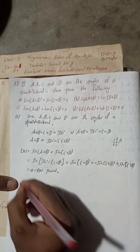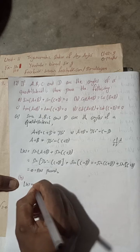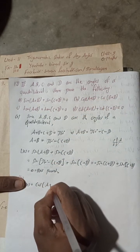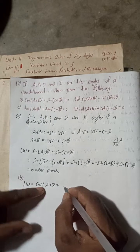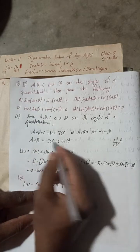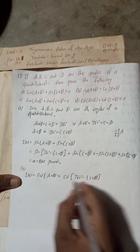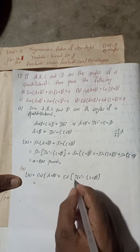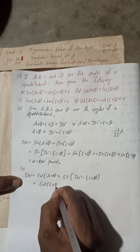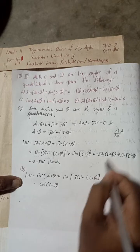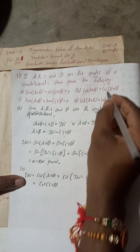For part B, LHS = cos(A+B). We can write A + B = 360° − (C+D), so LHS = cos(360° − (C+D)). For cos(360° − θ), the CAST rule says this lies in the fourth quadrant where cos is positive, so cos(360° − (C+D)) = +cos(C+D).